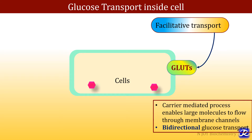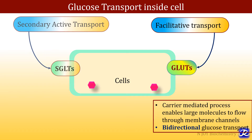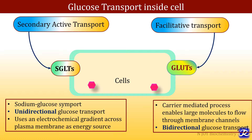This is the carrier-mediated process which enables large molecules like glucose to flow through membrane channels. This leads to bidirectional glucose transport. As soon as glucose is transported with the help of these GLUT receptors inside the cell, glucose has to be trapped in the form of glucose 6-phosphate. The other transport mechanism is secondary active transport, which occurs with the help of sodium glucose linked transporters.